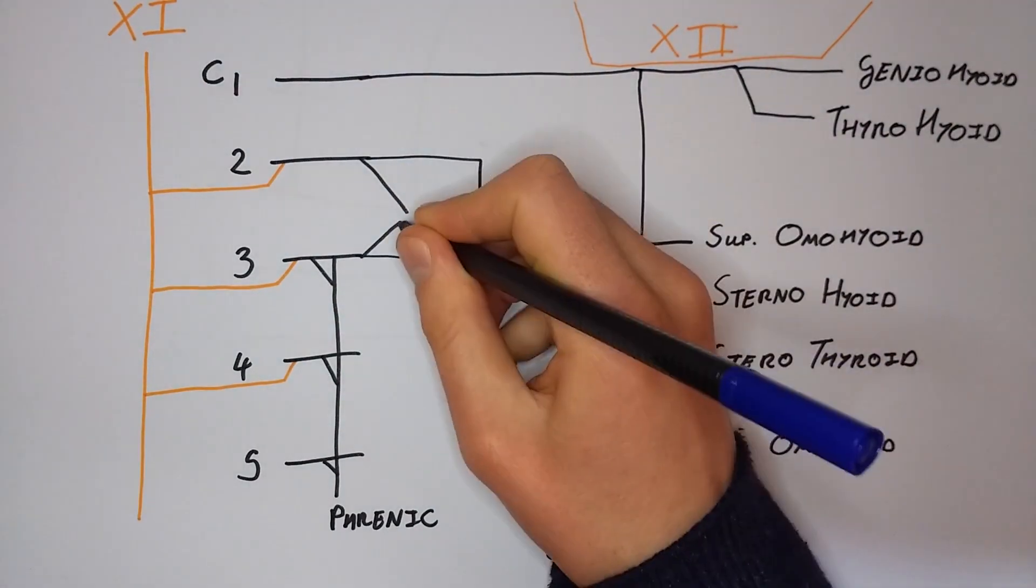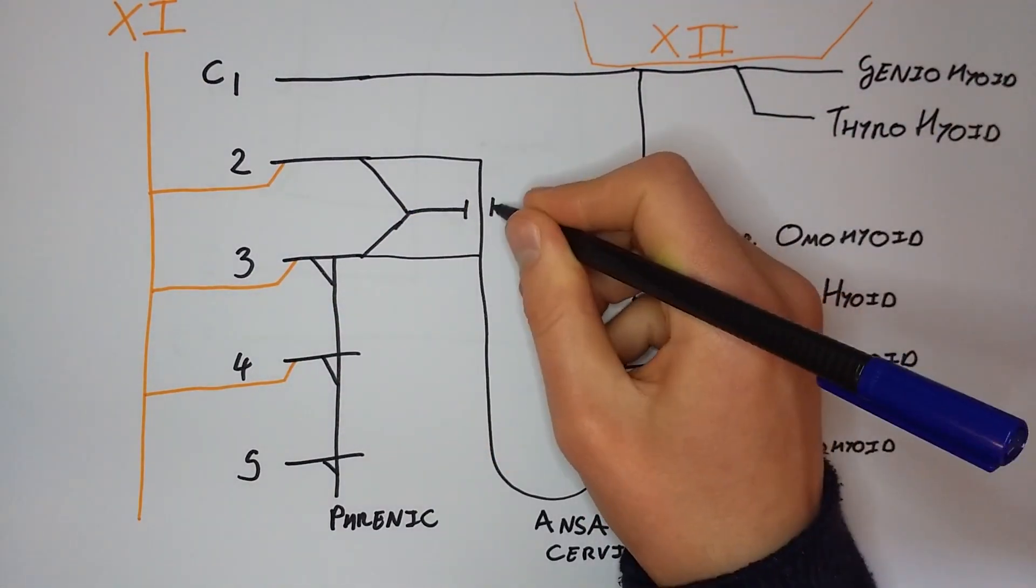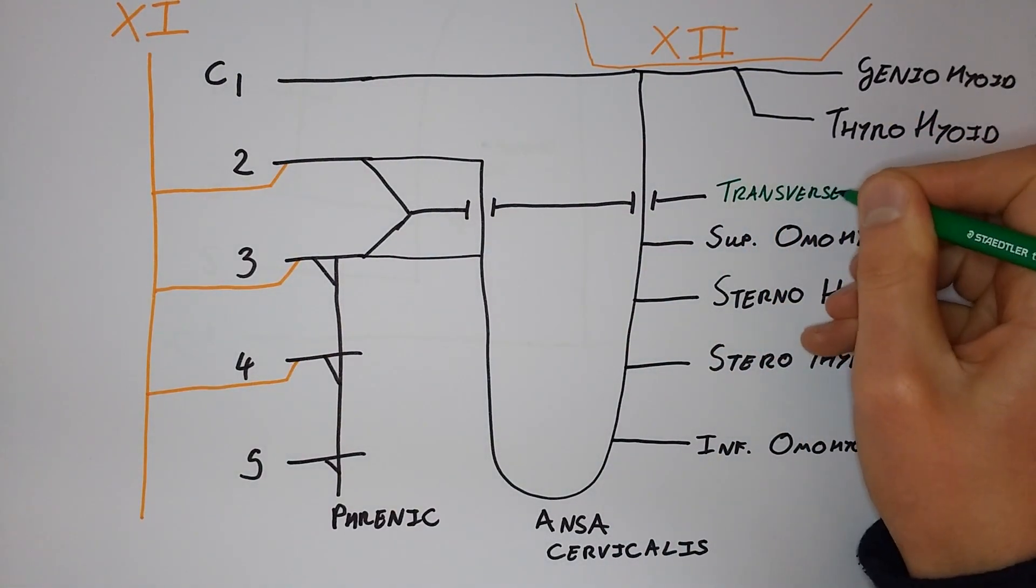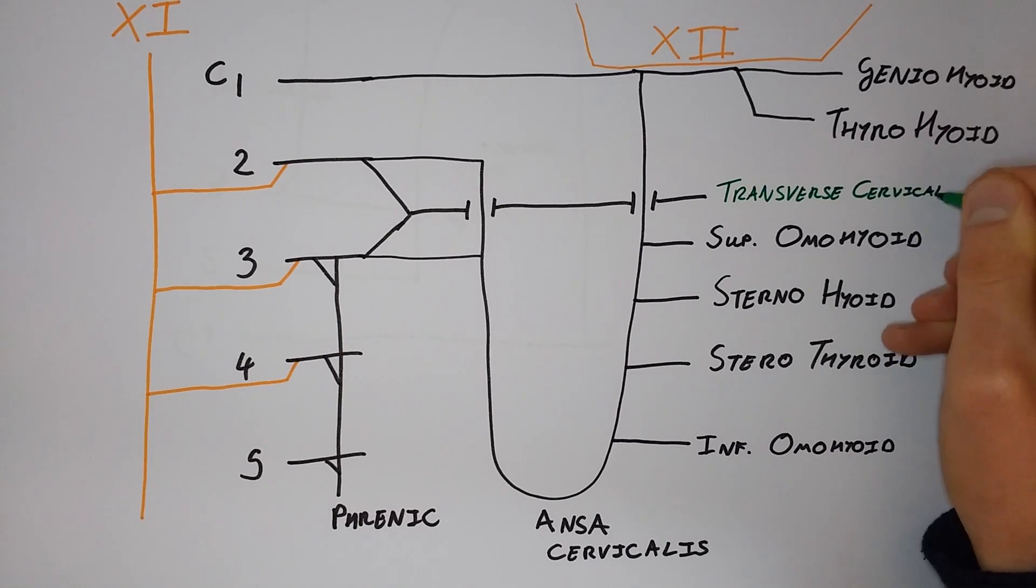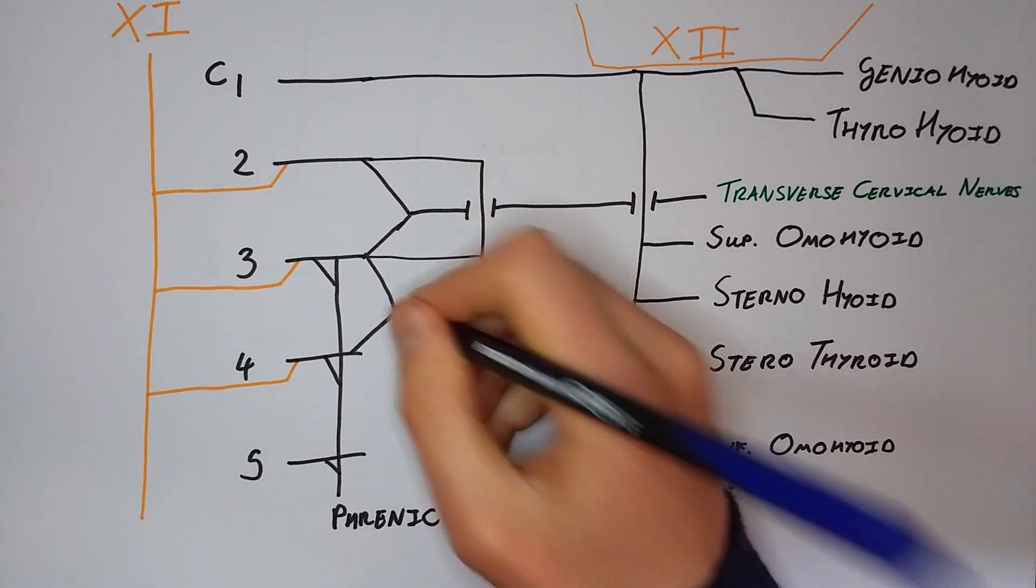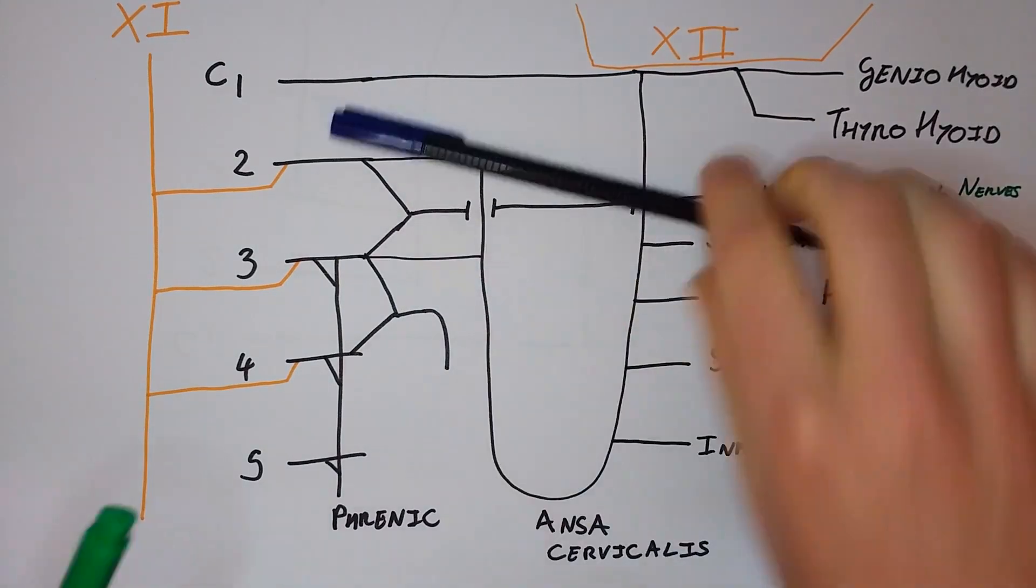Next we'll have the sensory nerves, and the first to consider is the transverse cervical nerves going across the plexus from C2 and C3. We've went across, so now let's go down with the supraclavicular nerves from C3 and 4.